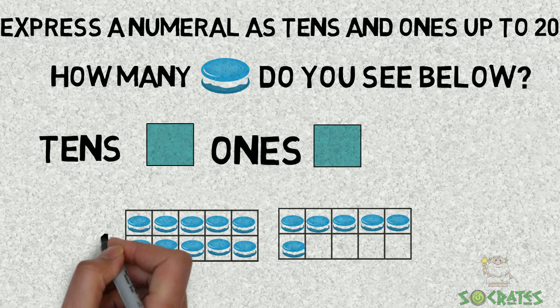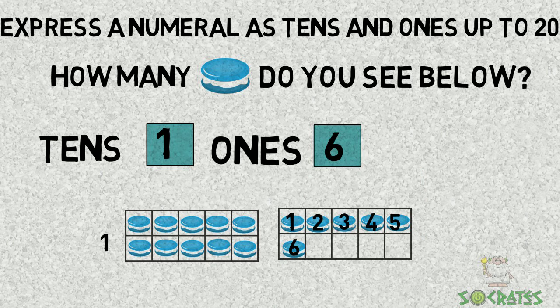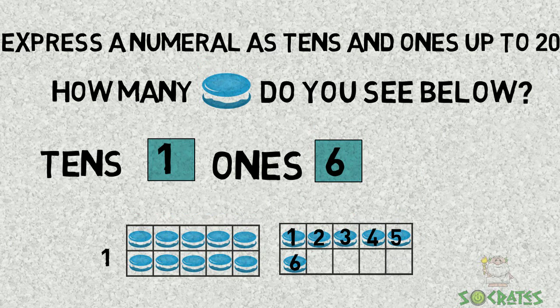I see one ten, so we put a one. And ones are one, two, three, four, five, six ones. One ten and six ones is sixteen.